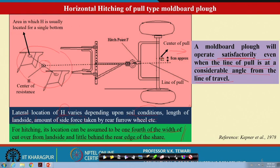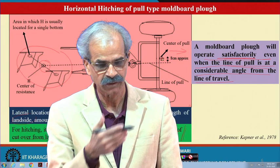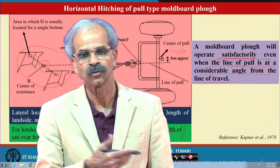This is the importance of horizontal hitching — even if the line of pull is at a considerable angle from the line of travel, satisfactory operation is still achieved because the hitching is in the horizontal plane. The location of h varies with soil condition, the length of the land side, and the amount of side force taken by the rear furrow fields. This covers what is horizontal and vertical hitching of pull-type implements, their stability conditions, and how the hitch point location affects tractor-implement operation.